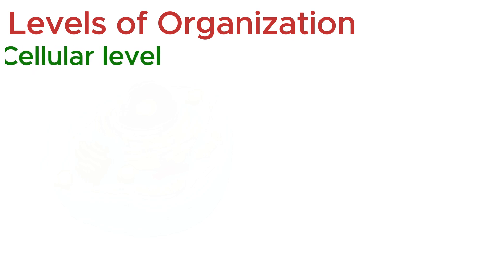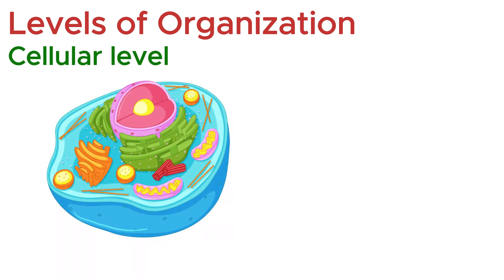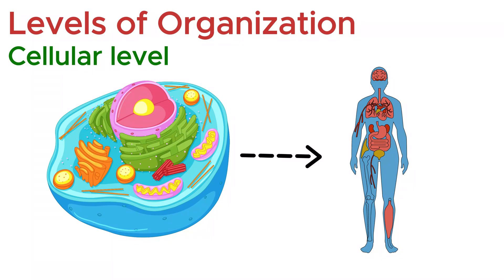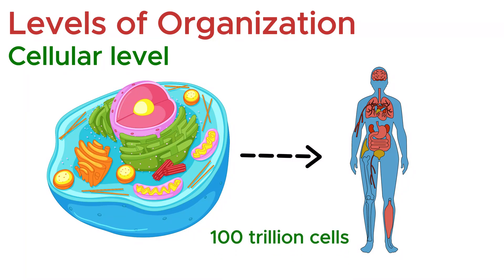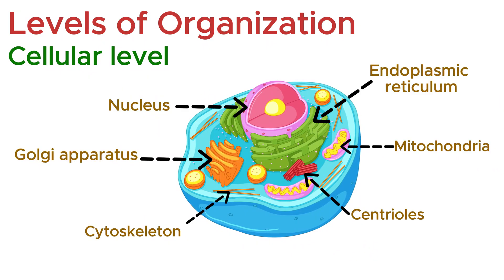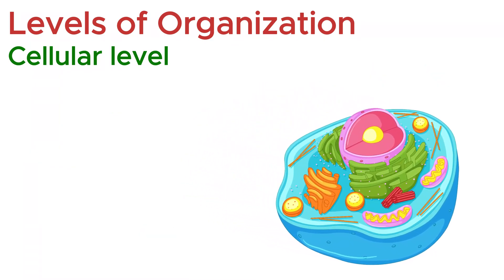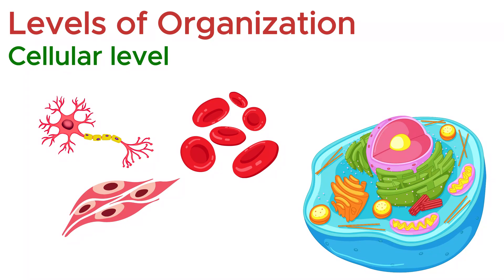Let's start with the cellular level. Cells are the smallest structural and functional units of all living organisms. Think of them as tiny bricks that form the foundation of life. The human body contains an estimated 100 trillion cells, each carrying out vital functions that keep us alive. Every cell is made up of subcellular structures, with each component performing a specific role necessary for the cell to function properly. Cells come in many shapes and types, each specialized for a particular task.